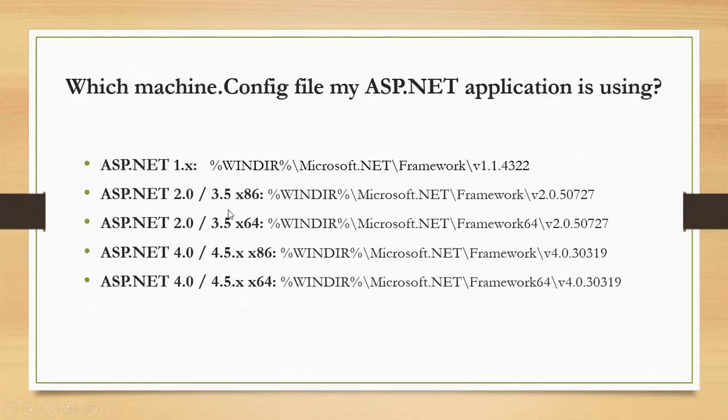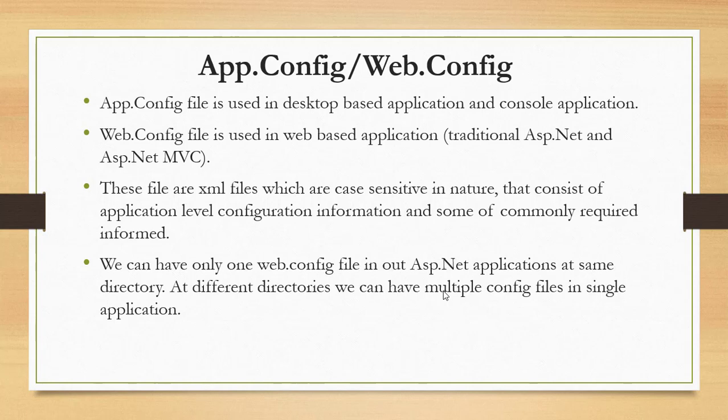app.config is used for client-installable applications; web.config is used for web applications. Both are XML documents and are case sensitive. They store application-level configuration information. You can have only one web.config file in a given directory of your web application — whether it's a traditional Web Form or MVC-based application — but multiple web.config files can exist across different directories.